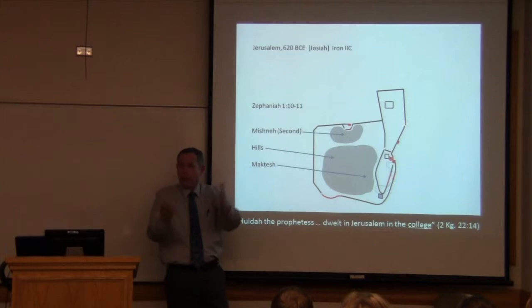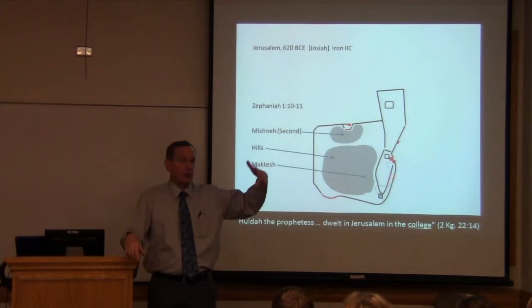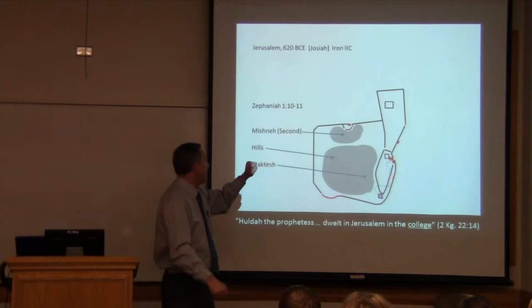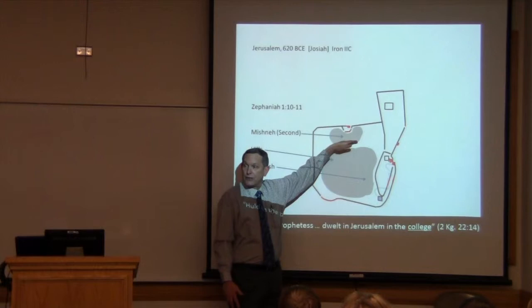The word does mean second or additional. Some of you have done Jewish studies. You know about the Mishneh and the Gemara. The Mishneh is the additional law, right, the oral Torah written down. The second law, whereas Genesis or Deuteronomy is the first law, the first Torah. In this case, it's not referring to a second law. It's referring to a second neighborhood outside the city walls.